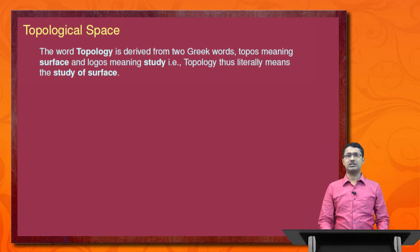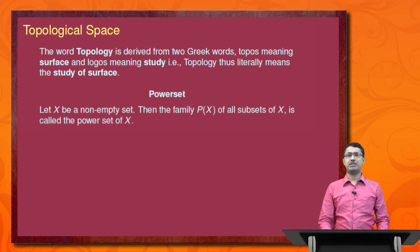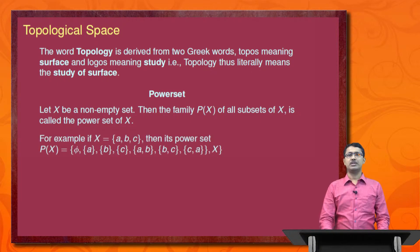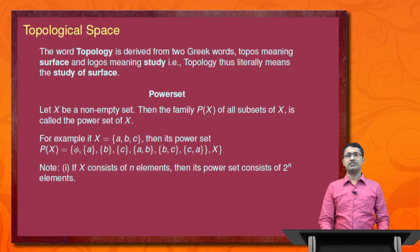Before going to the discussion of topology, we first introduce the definition of a power set. Let X be a non-empty set; then the family P(X) of all subsets of X is called the power set of X. For example, if X = {a, b, c}, a set consisting of three elements, then its power set is: phi, singletons {a}, {b}, {c}, doubletons {a,b}, {b,c}, {c,a}, and X itself.